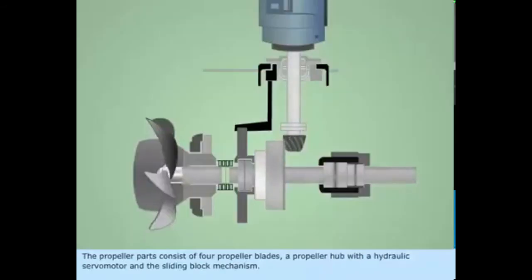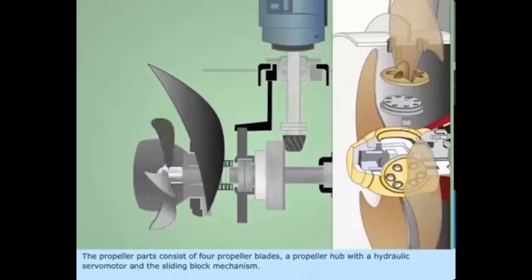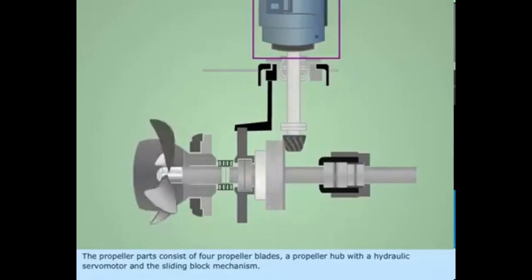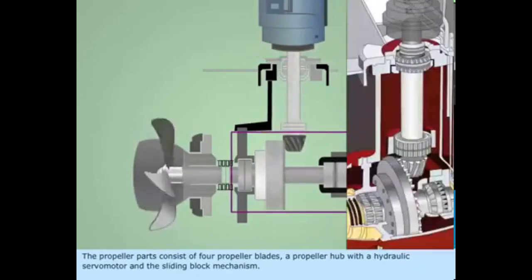The propeller parts consist of four propeller blades, a propeller hub with a hydraulic servo motor, and the sliding block mechanism.